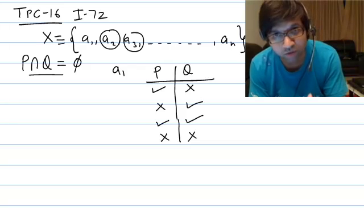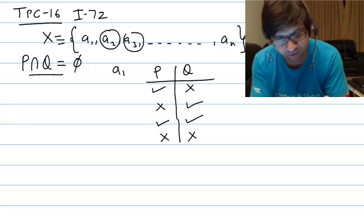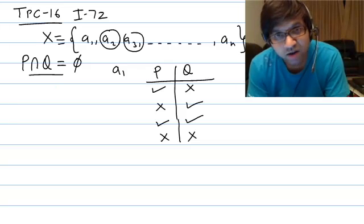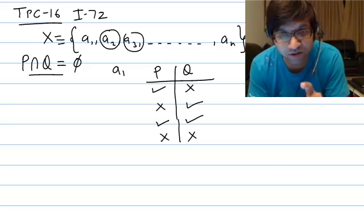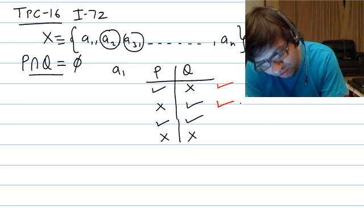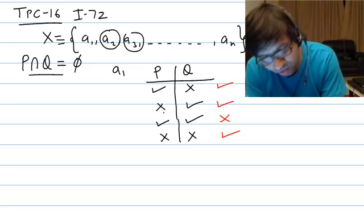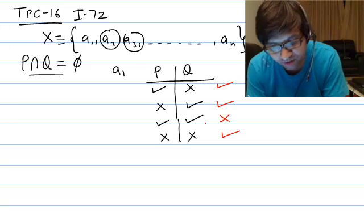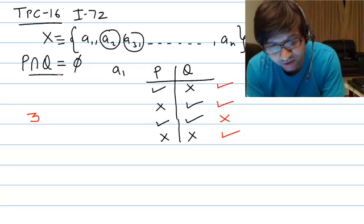We need to find the favorable options for a1 so that P intersection Q is empty — meaning no common element in P and Q. If an element is present in both P and Q, it will appear in P intersection Q. So we must ensure each element is either in P but not Q, or in Q but not P, or in neither. That gives three favorable options per element — the option of being in both P and Q is not favorable.